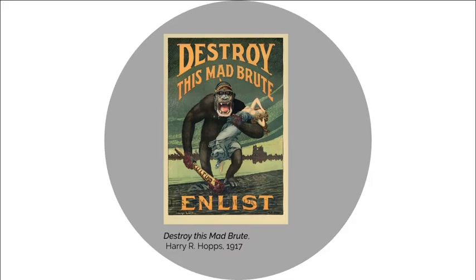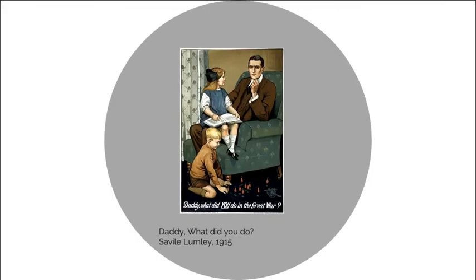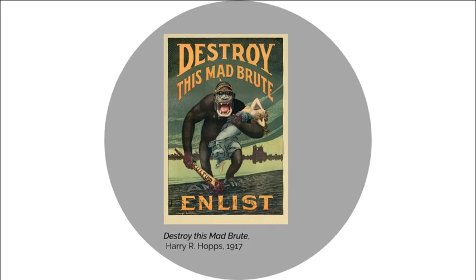Comparing a group of people to animals — we see that today, we see it then, we see it in ancient Rome, we see it in ancient China. It goes way back — the idea that they are lesser than human, that they represent the more animal parts of human nature as opposed to logic, reason, and love.